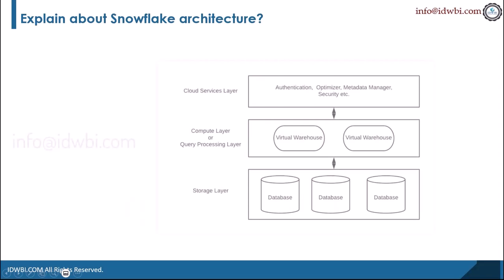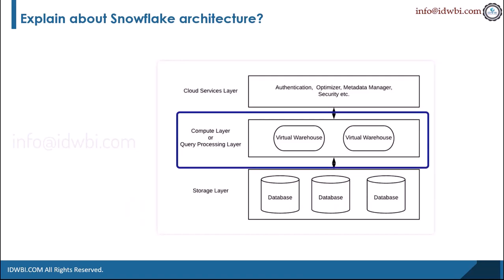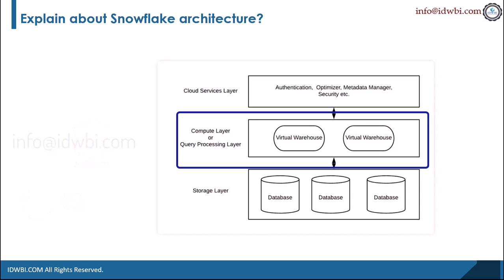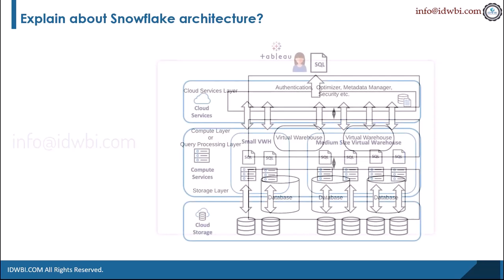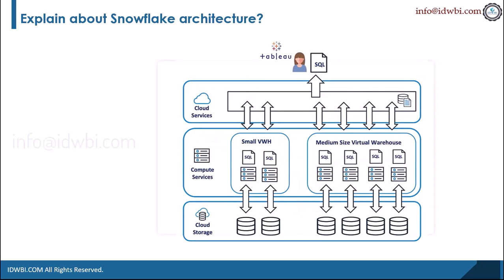The compute layer relies on standard computing infrastructure — virtual machines available in a public cloud environment. In AWS these are EC2 instances; in GCP they are compute engines. The virtual warehouses, which form a critical component in the Snowflake architecture, can process massive volumes of data with a high degree of efficiency and performance.